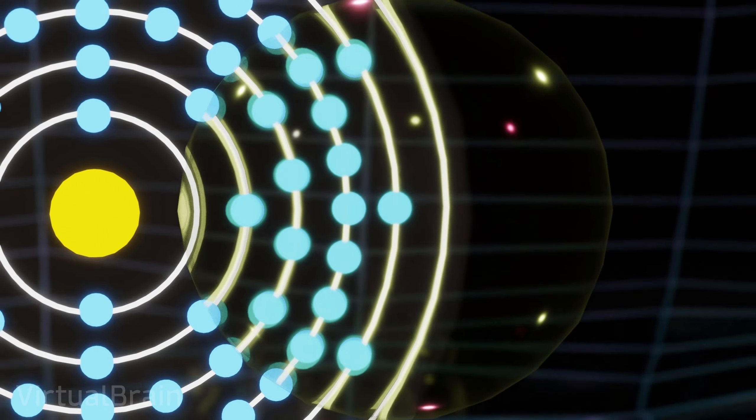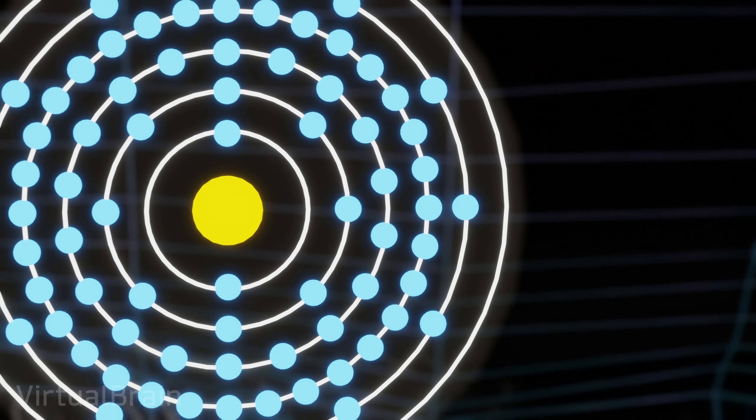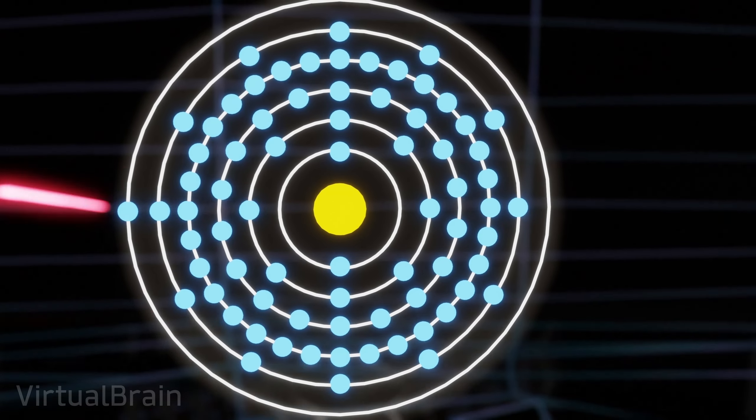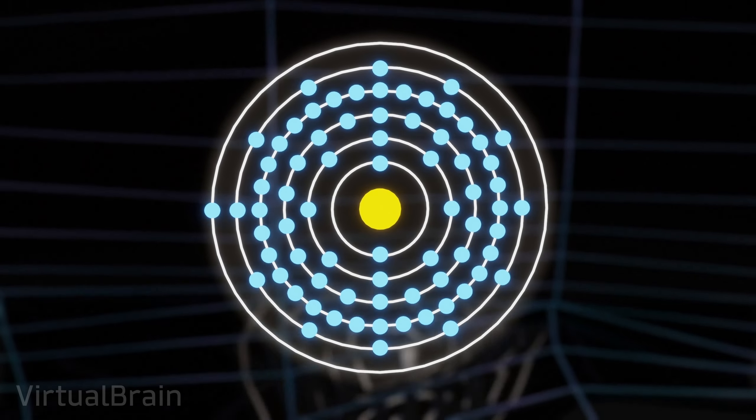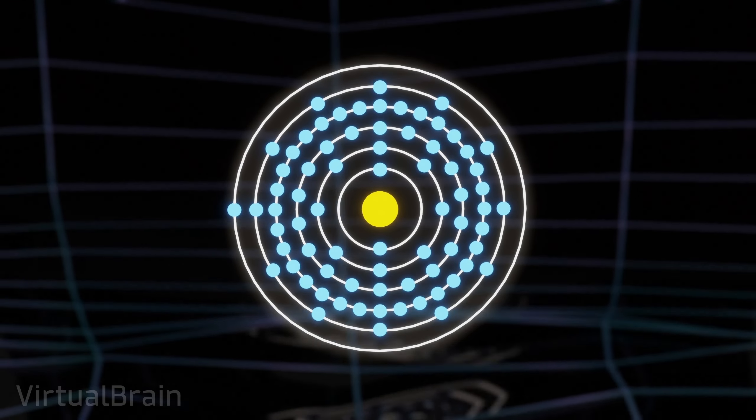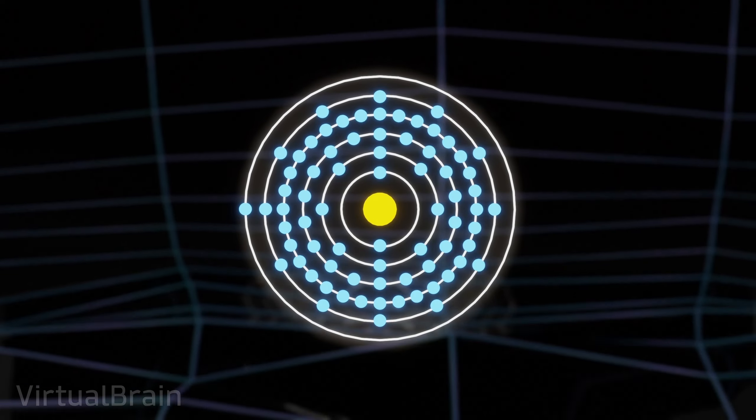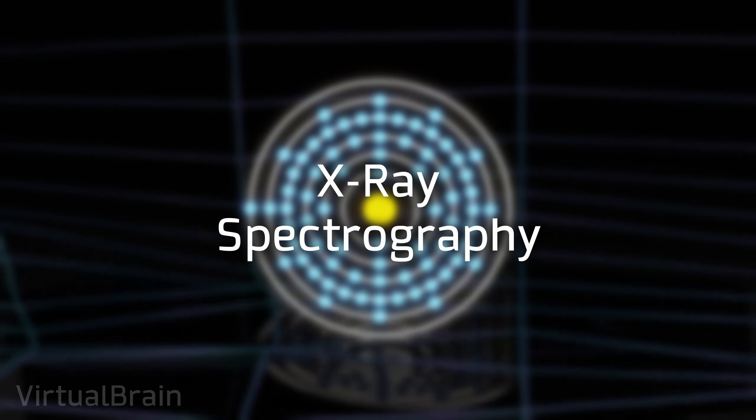Since each element has a defined atomic structure, each time this happens, the amount of energy contained in the emitted X-rays will depend exclusively on the element with which the collision was generated, and the shell in which the ejected electron was found. In other words, each element will have its own radiation profile, allowing us to identify them by measuring the energy of the X-rays resulting from the collision with the electrons. This process is known as X-ray spectrography.